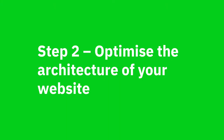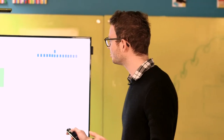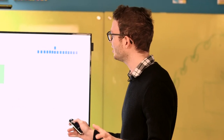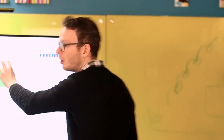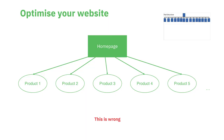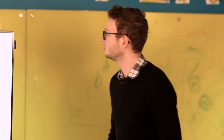The second step is to optimize the architecture of your website. If we look at our competitors, the structure of their website has a home page, then product one, product two, product three, product four, product five, and so on. This type of flat structure is particularly wrong for SEO.